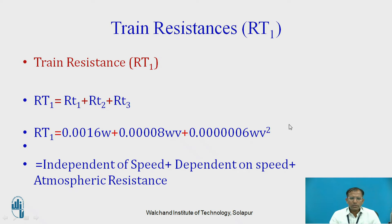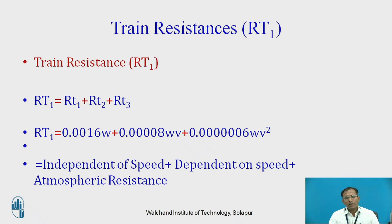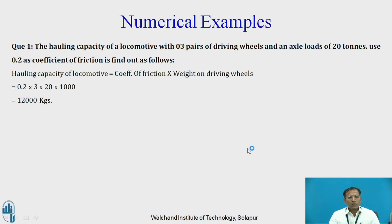We also know that the total resistance RT has components RT1, RT2, and RT3 — on a plane, these are: independent of speed, dependent on speed, and atmospheric resistance.